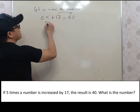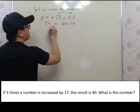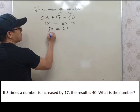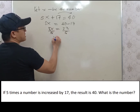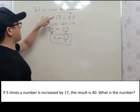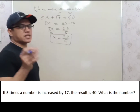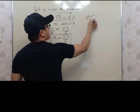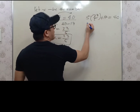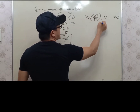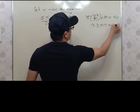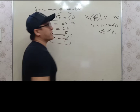Transposing, we have 5x = 40 − 17, so 5x = 23. Dividing both sides by 5, x = 23/5. Let's check: 5 times 23/5 plus 17 — the 5s cancel, giving 23 + 17 = 40. And 40 = 40, so our answer is correct.